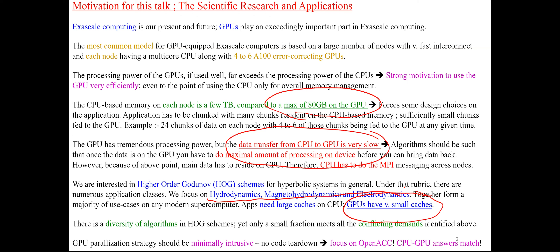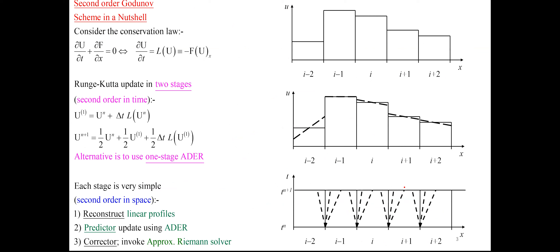We also want an application that is minimally intrusive — we don't want to tear down the whole code and write another CUDA code, because that would make it impossible to meet the verification and validation standards. A typical hyperbolic partial differential equation can be written in the simple form Du/dt + d/dx of the fluxes = 0, which means that at each zone in the computation, you have a slab of fluid.